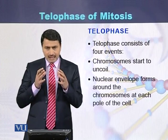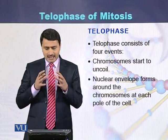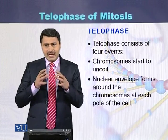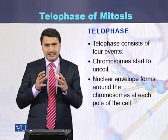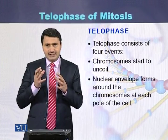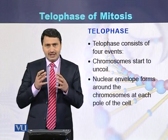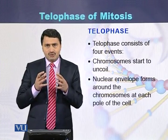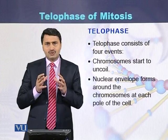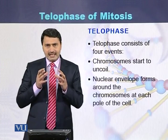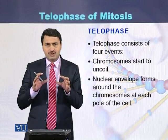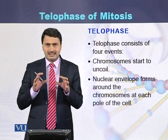The second event in telophase is that the nuclear membrane, which had disappeared during prophase, starts to reappear around the chromosomes that have arrived at both poles of the cell.